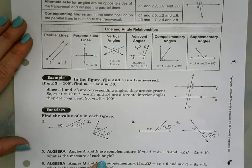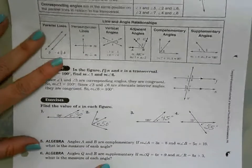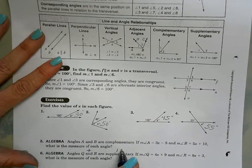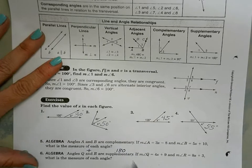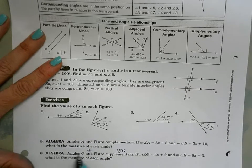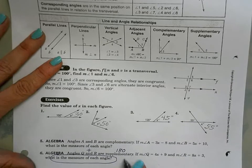As promised, number six I'm going to do for you. It says angles Q and R are supplementary, which means when I add them together I'm going to get 180 degrees. If the measure of angle Q is 4x plus 9 and the measure of angle R is 8x plus 3, what is the measure of each angle?